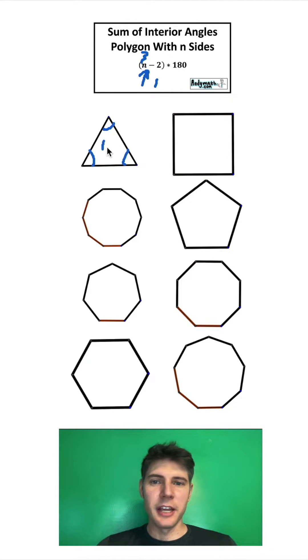We can also do it for a square. If we plug in a 4 for the n, 4 minus 2 is 2, and 2 times 180 equals 360. That means these four angles add up to 360 degrees.